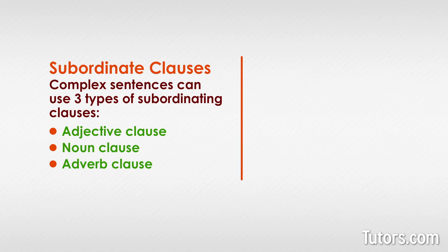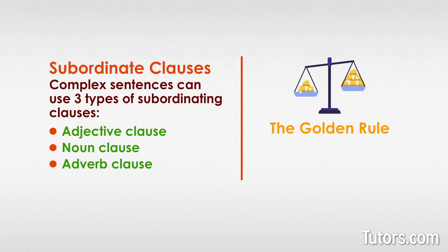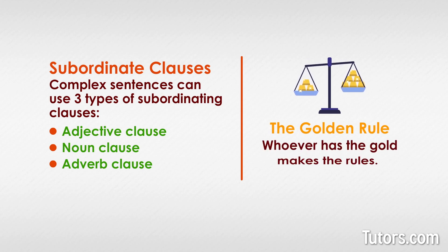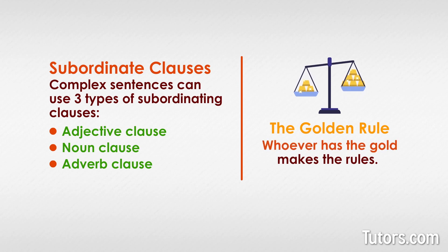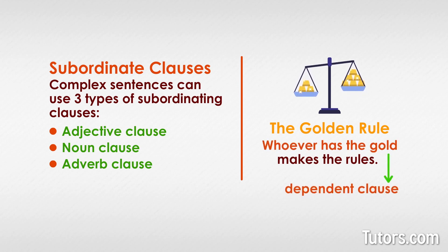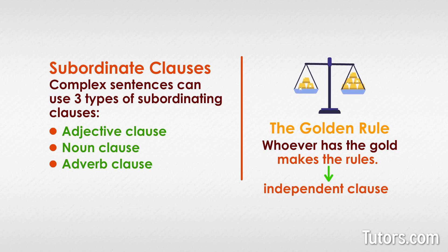A tongue-in-cheek example is the golden rule, which facetiously says whoever has the gold makes the rules. The noun phrase 'whoever has the gold' serves as a dependent clause to the independent clause — the entire sentence.